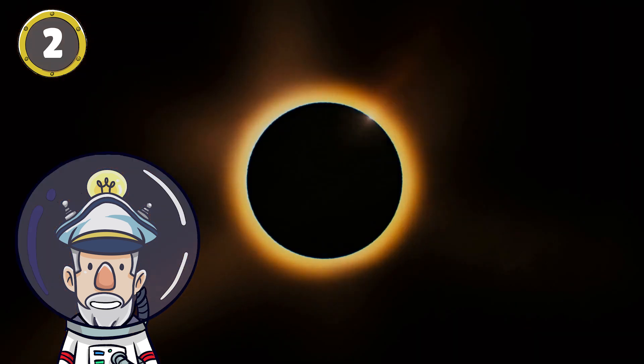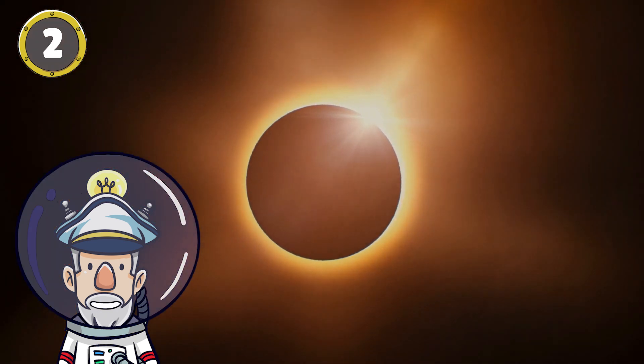Number 2: A solar eclipse occurs when the Moon is between the Sun and the Earth.